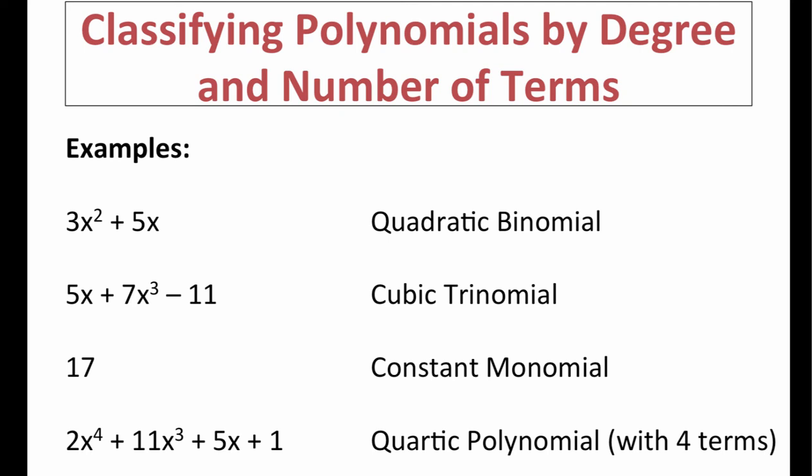The second example is a trick: 5x plus 7x to the third minus 11. The highest exponent is not on the left like we usually see — it's in the middle. So this is a cubic function because the highest exponent is 3. It's also a trinomial because there are three terms: 5x, 7x to the third, and negative 11. That last term is listed as negative 11 because you can think of it as adding a negative number.